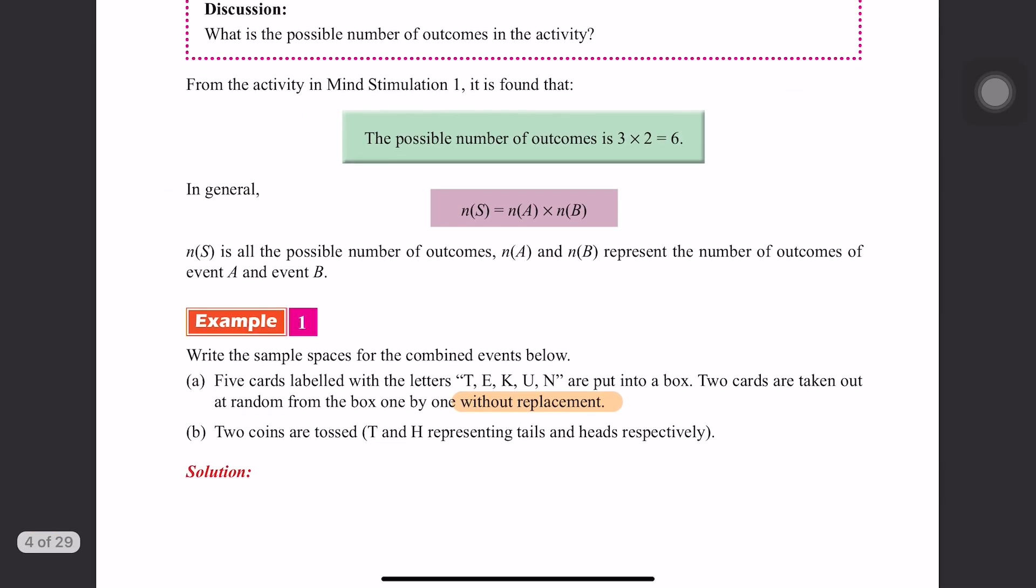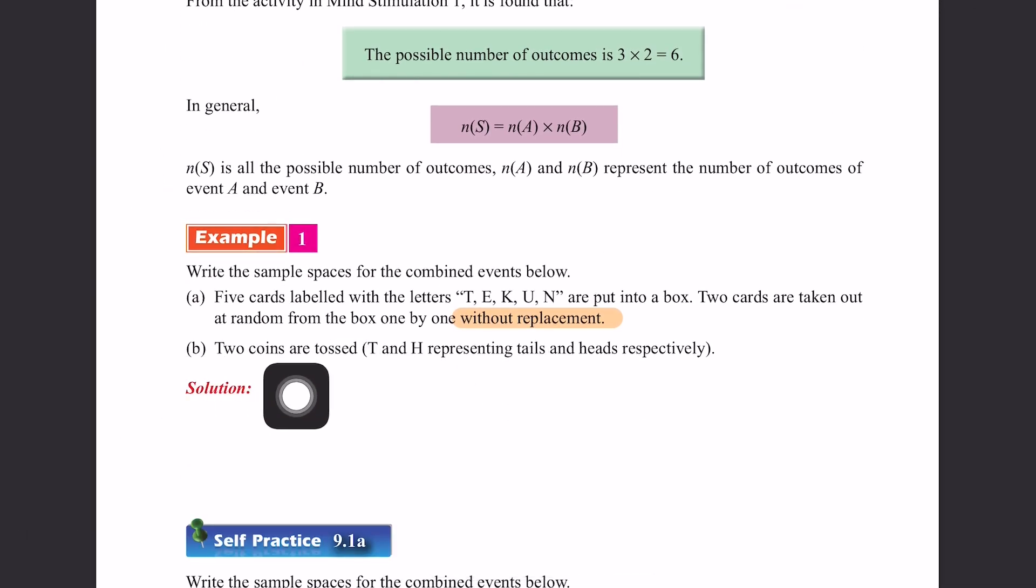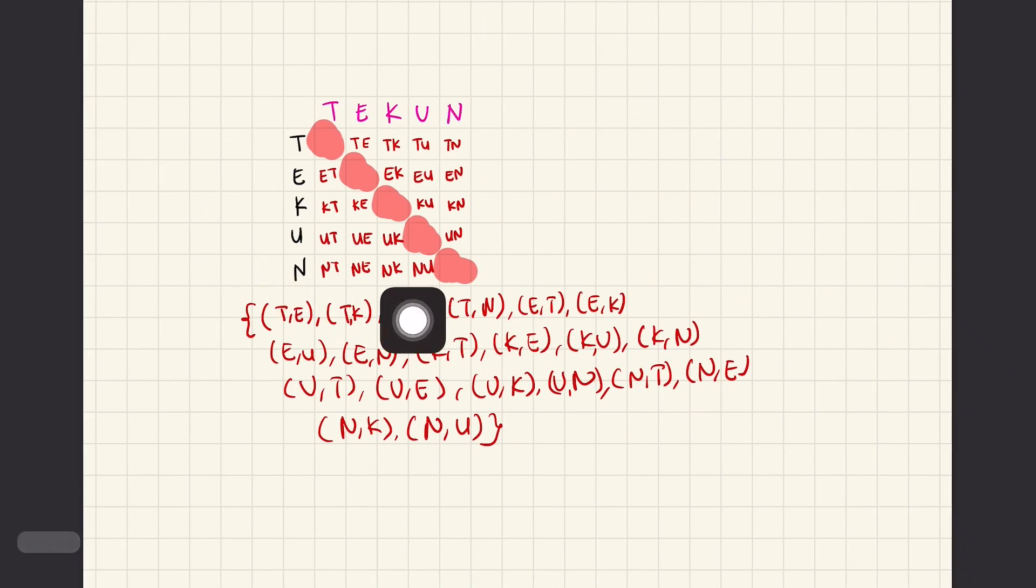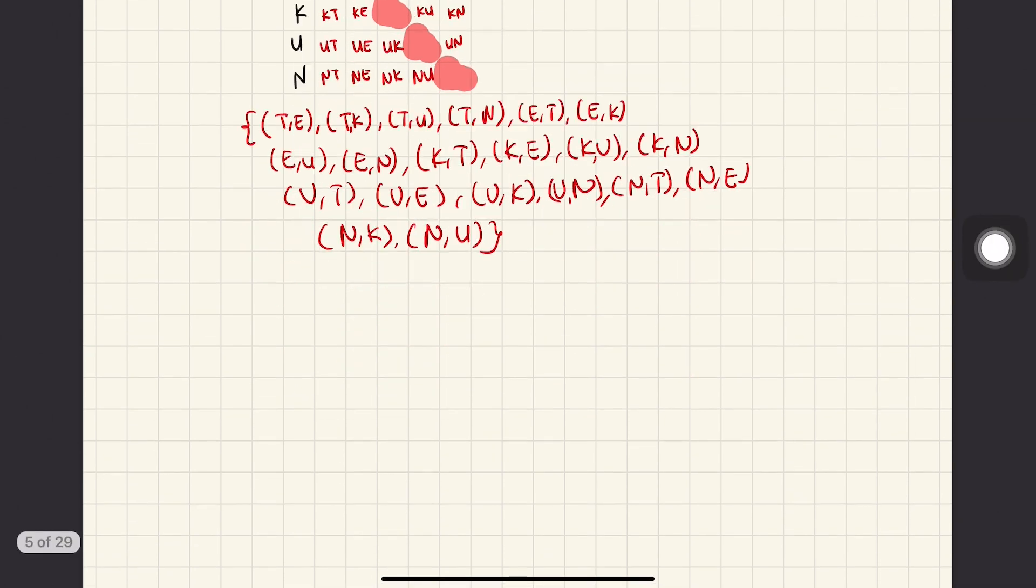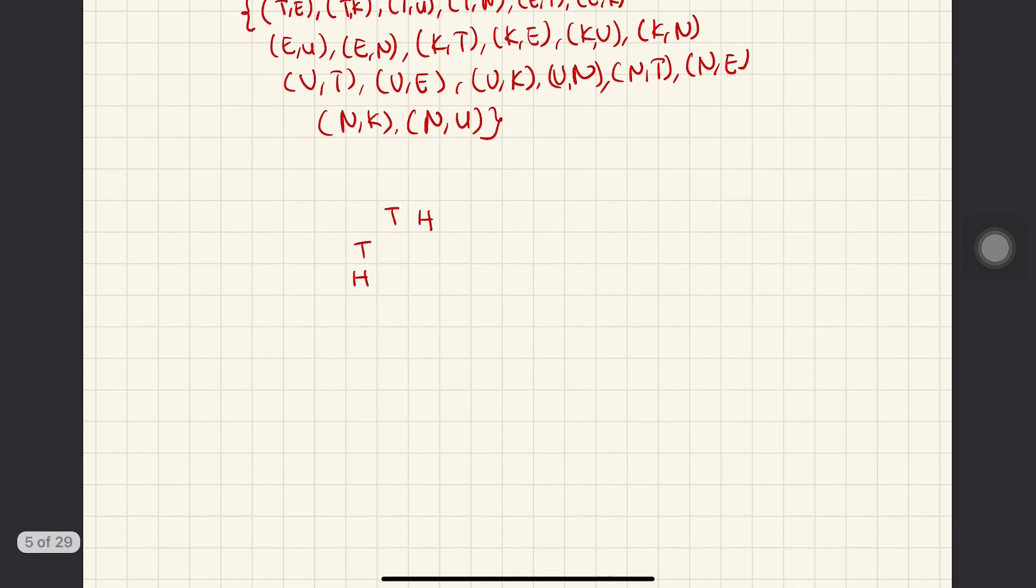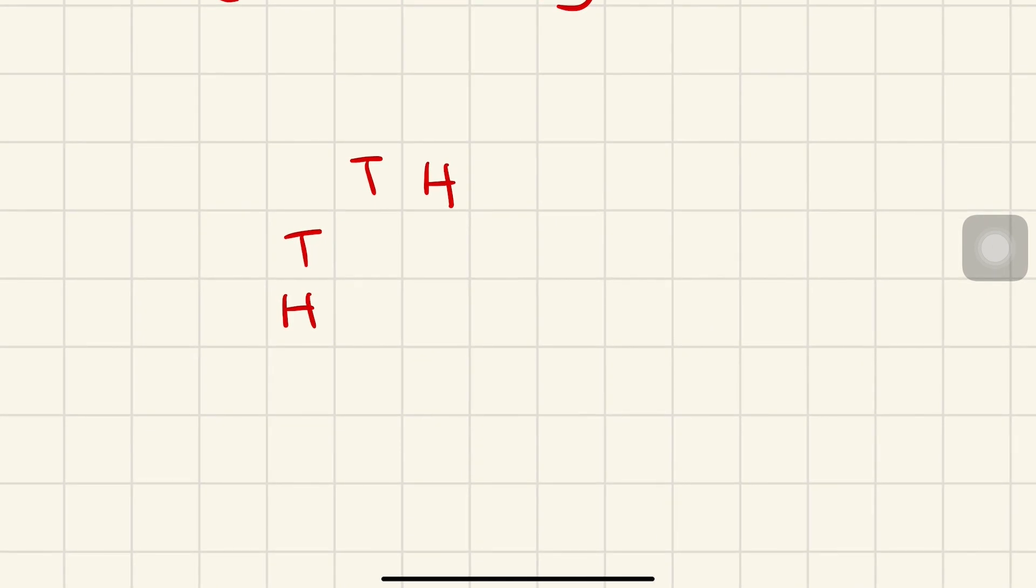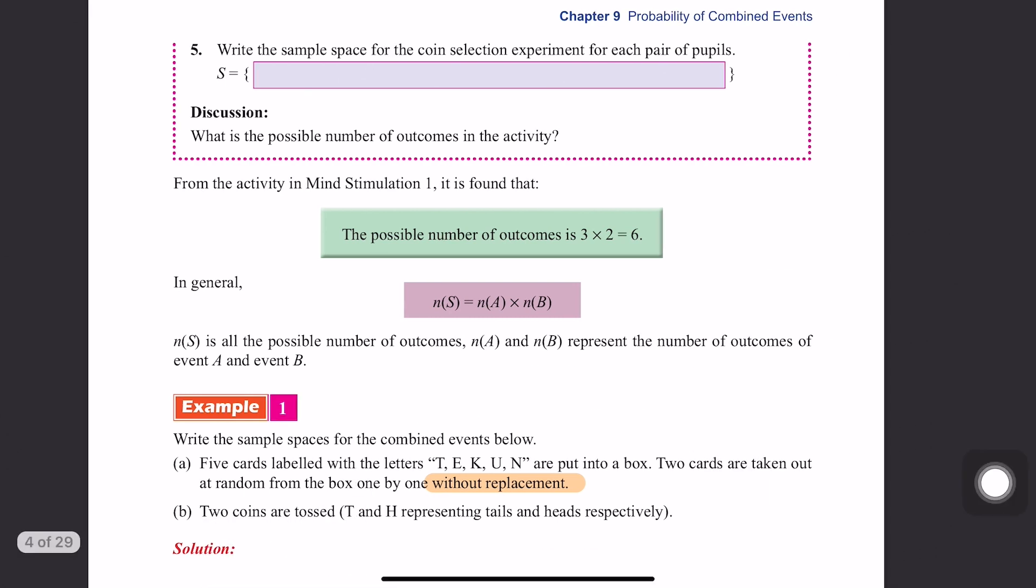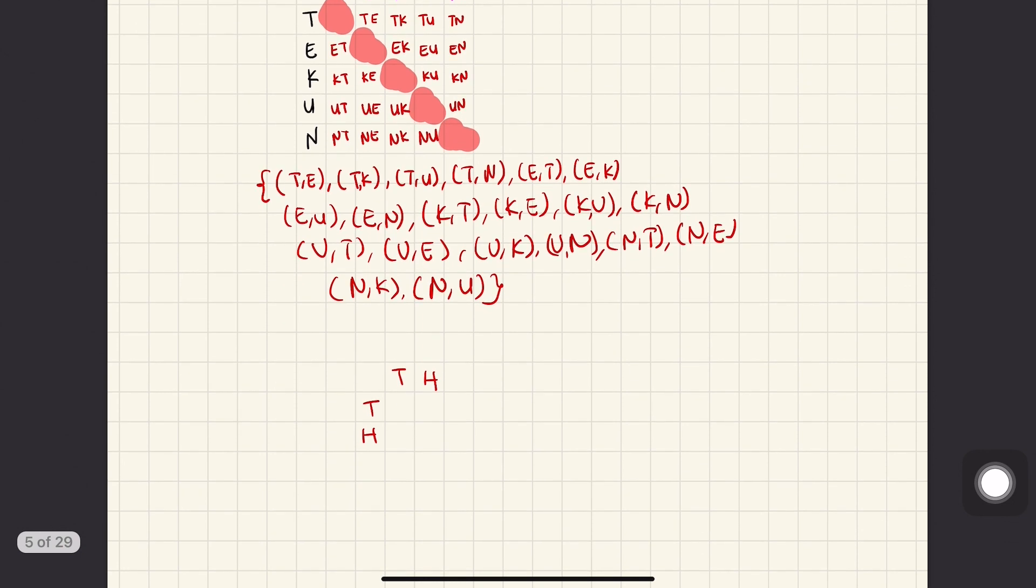Next, the second question. Two coins are tossed. We have T for tail and H for head. So how can we use this situation for question B? We have tail and head for the first coin, tail and head for the second coin. These are two different coins.